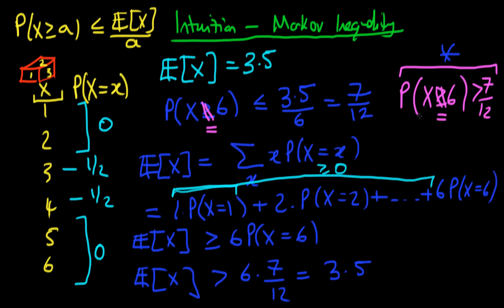So that's the intuition for why Markov's inequality is true. It places an upper bound on the probability associated with a particular value, because if there weren't that upper bound, the expected value for that random variable would actually have to shift up.